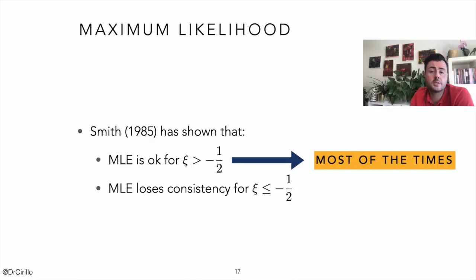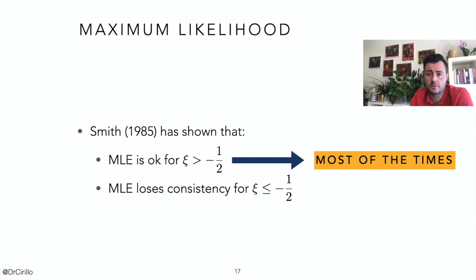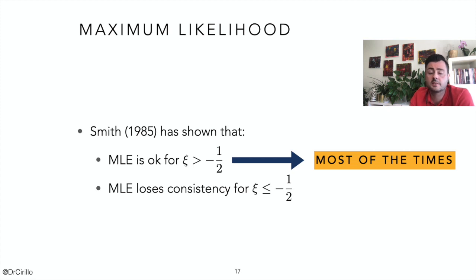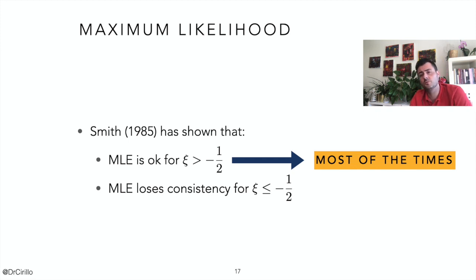Maximum likelihood estimation is totally okay, and possibly the best way to estimate the parameters of your GEV when the Xi parameter is larger than minus one half. It can be proven that in the opposite situation — when Xi is smaller than or equal to minus one half — the MLE loses consistency. In those situations, it is better to use other approaches like the probability-weighted-moments.